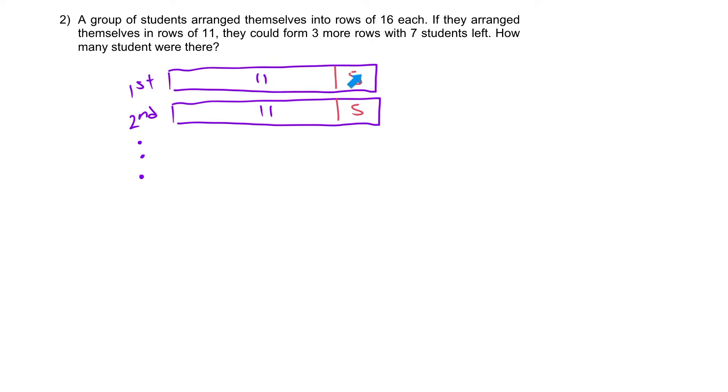So 11, 11, there's five people. They're going to leave, they're going to exit to form the new rows. So they're going to come, all this five people in each row, they're going to leave their current rows and form new rows. They're all going to combine together and form three more rows with seven students that can't join anywhere.